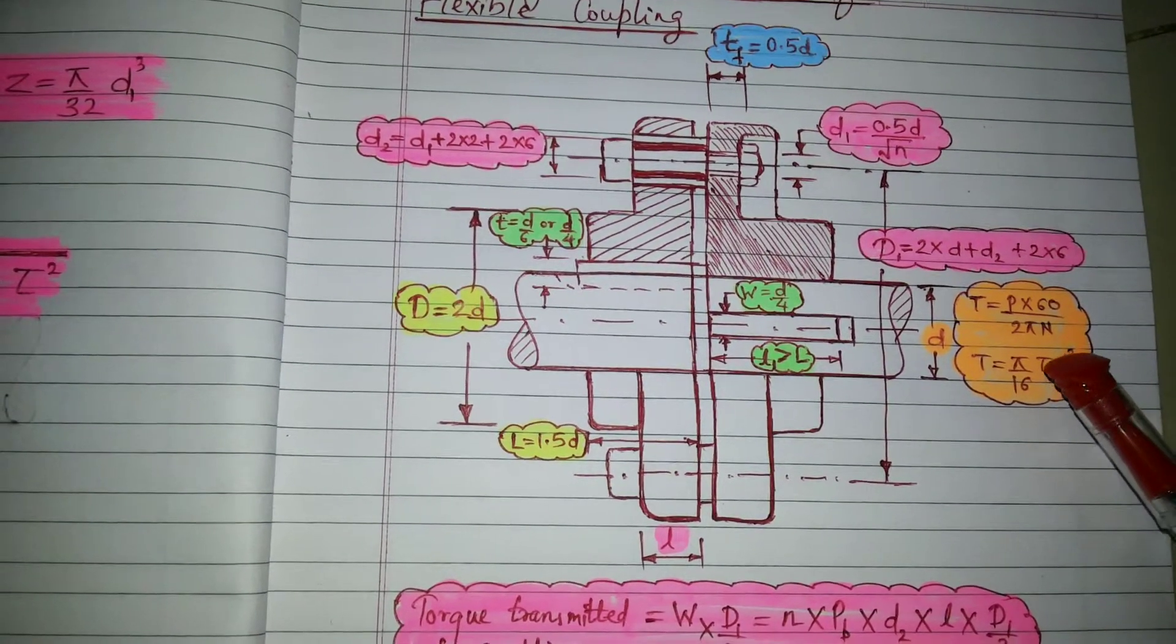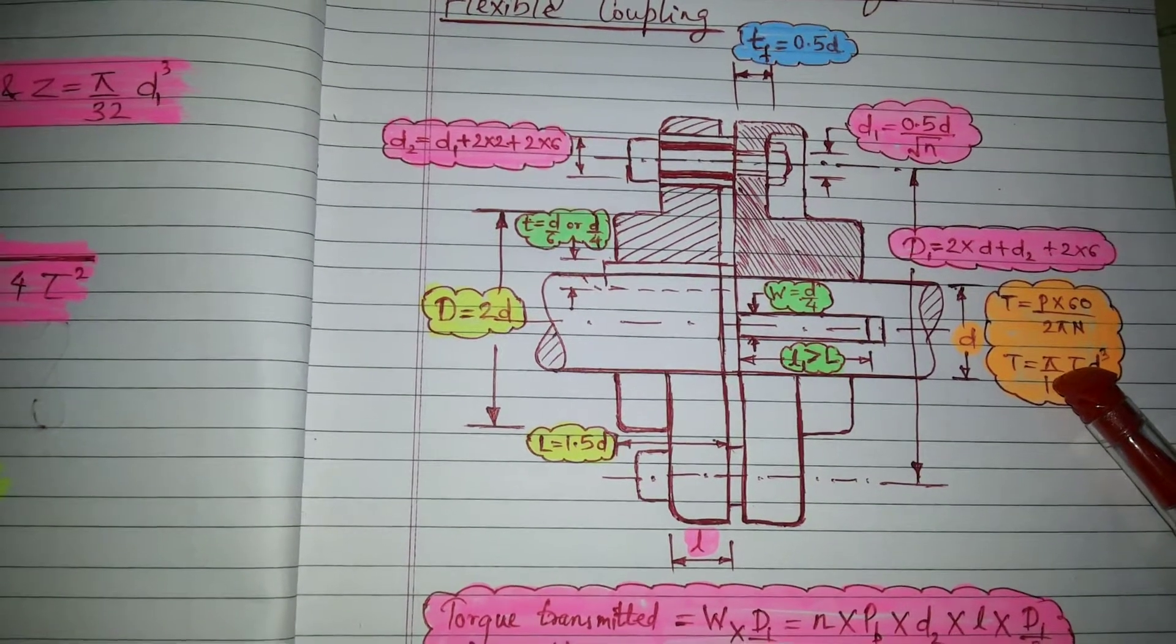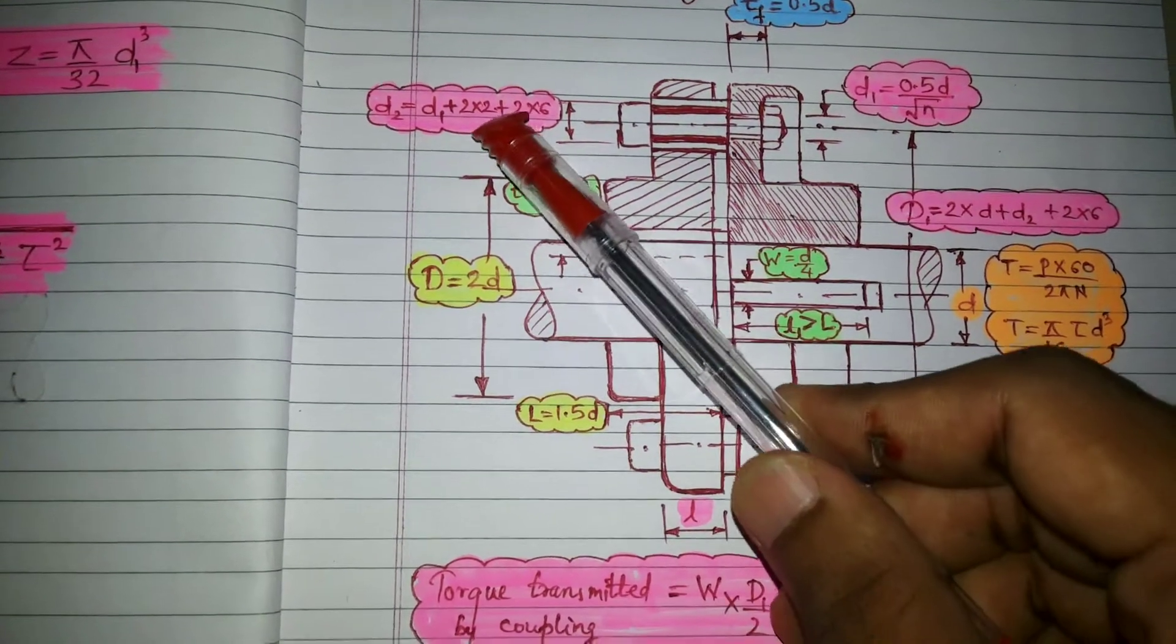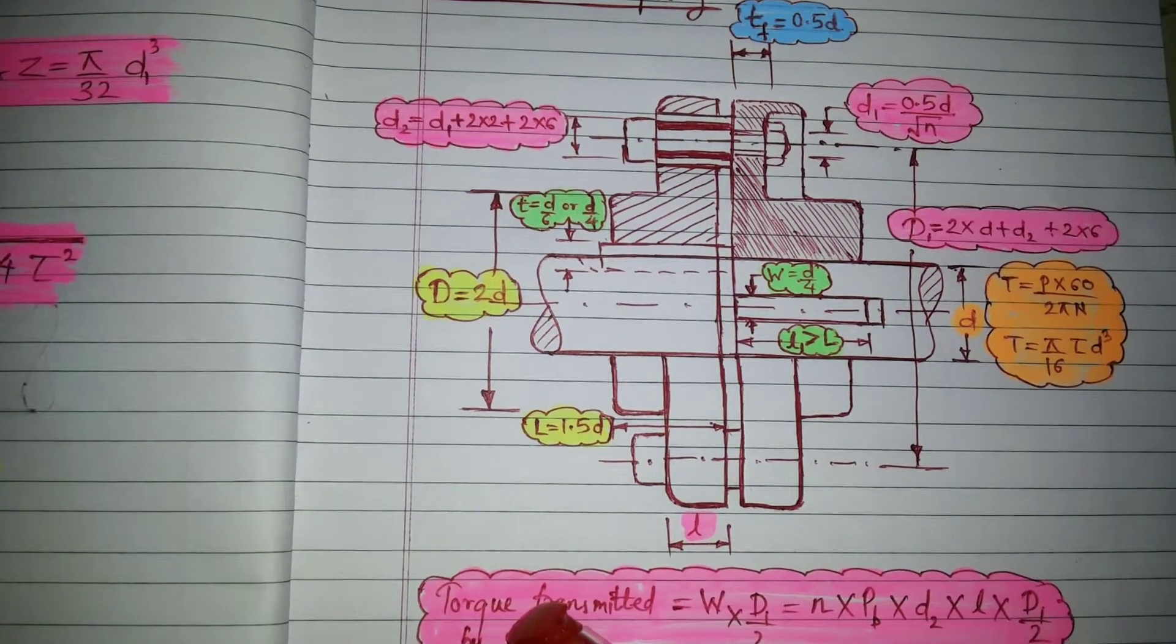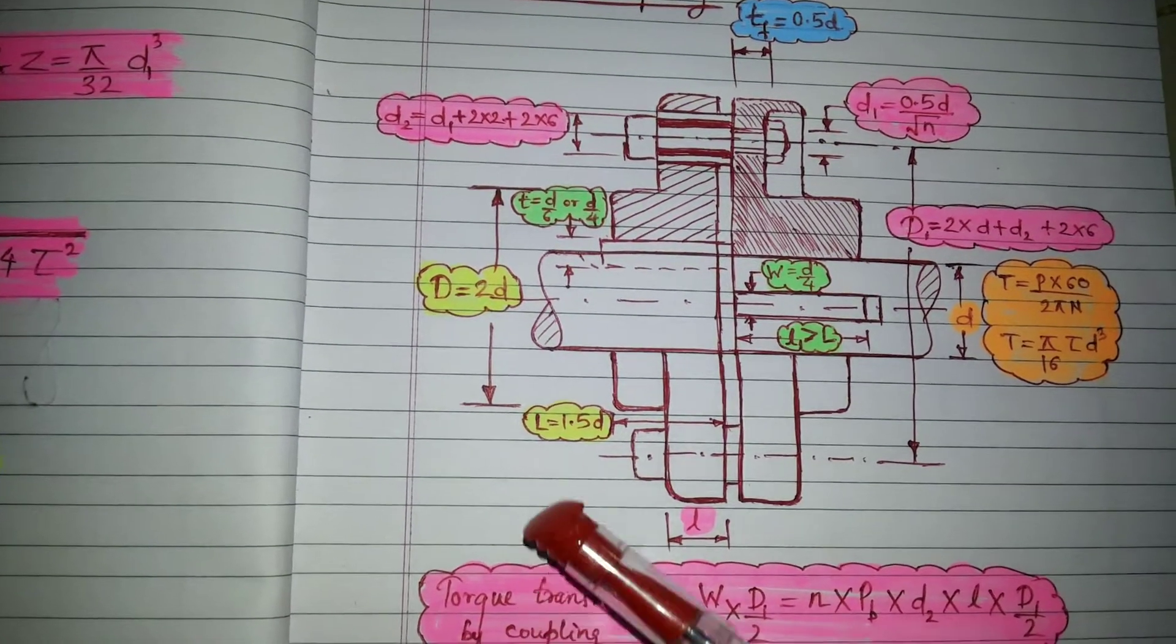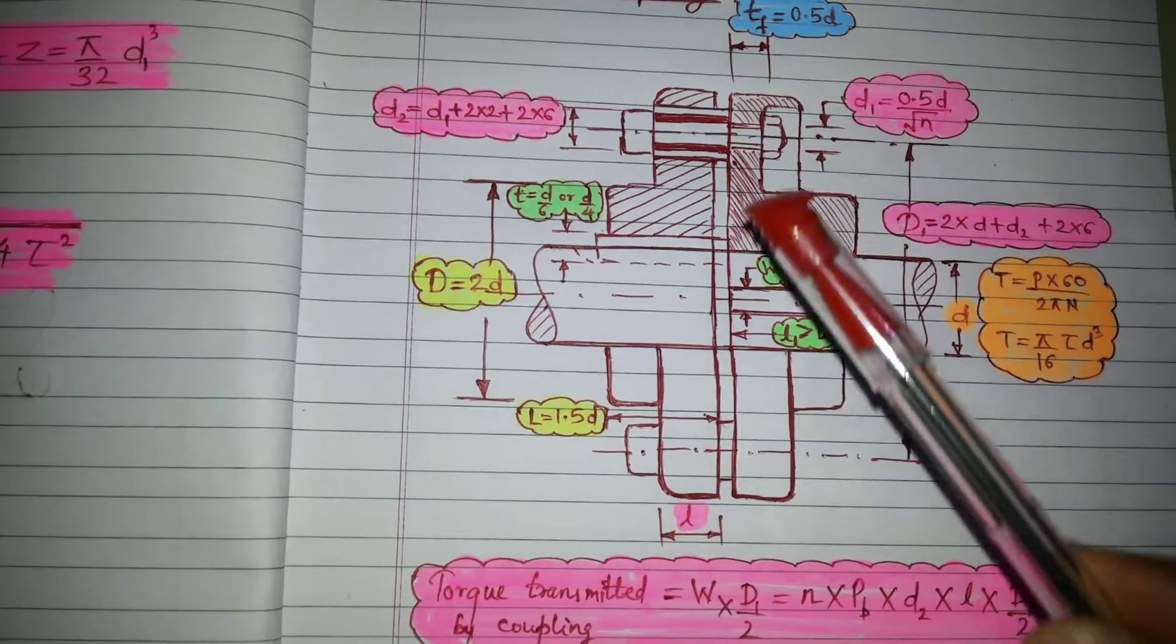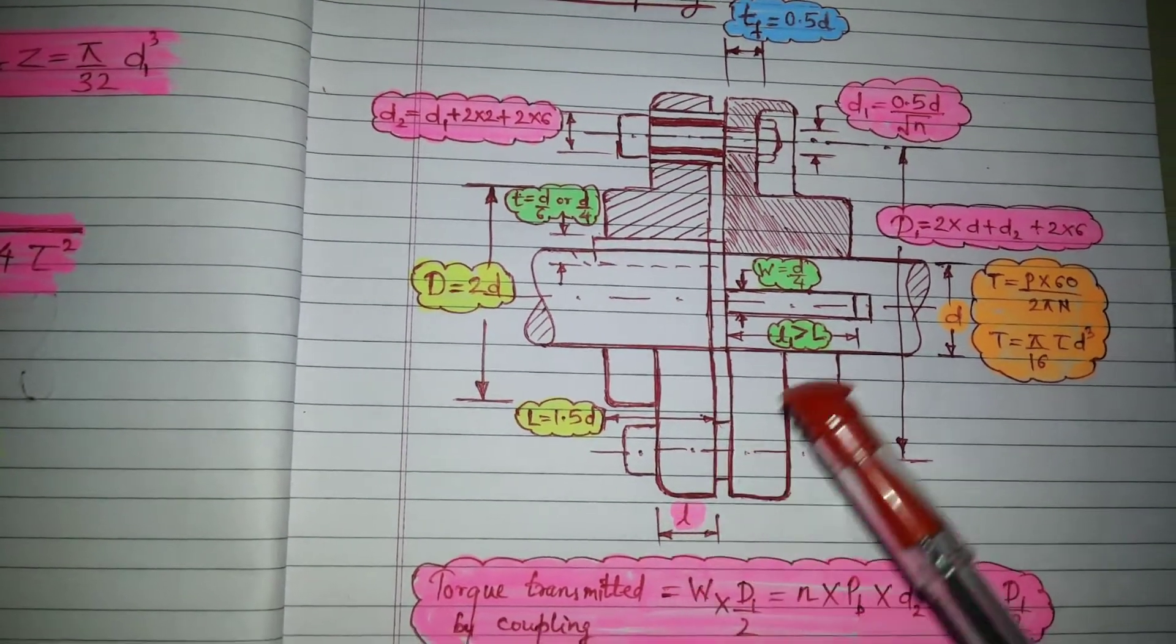So now, this step number one is related to the shaft and step number two is related to various dimensions and then step number three is related to the dimension of hub and step number four is related to the design of key and step number five is related to design of flange.